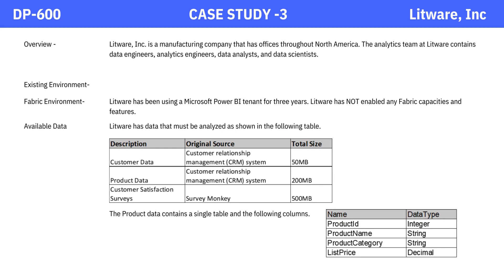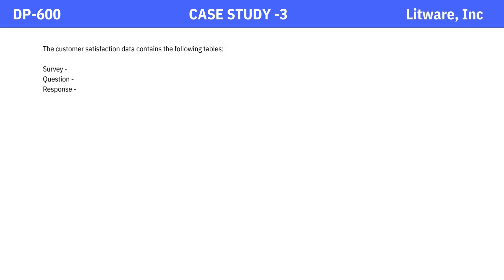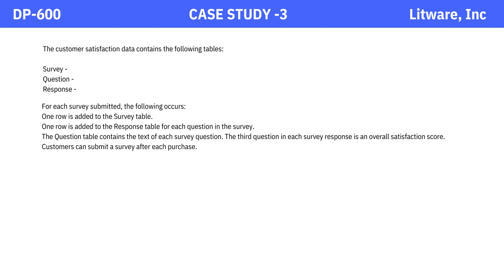In the available data, Litware has data that must be analyzed as shown in the following table, and the product data contains a single table and the following columns. The customer satisfaction data contains the survey, question, and response tables. For each survey submitted, one row is added to the survey table, and one row is added to the response table for each question in the survey. The question table contains the text of each survey question. The third question in each survey response is an overall satisfaction score. Customers can submit a survey after each purchase.